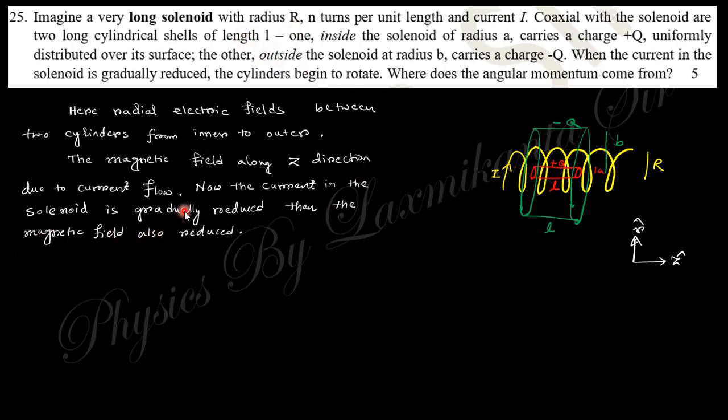I cannot solve this question at this moment. I'll just tell you that the angular momentum comes because the magnetic field is reduced—the current is reduced, so the magnetic field reduces. The magnetic field energy also reduces.